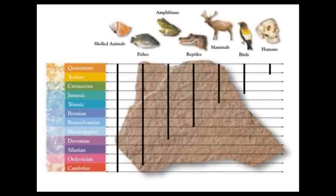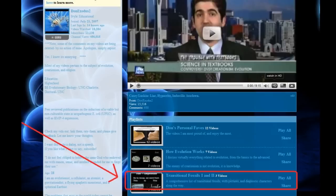Such analysis is dependent on transitional fossils to show how features are being modified and changing over time. Before you parrot the creationist claim that there are no transitional fossils, I have a transitional fossil playlist where dozens are discussed in depth — ignorance is no longer an excuse. I just demonstrated one example with the reptilian and mammalian middle ear, but are there more? And more importantly, do they yield the same results?